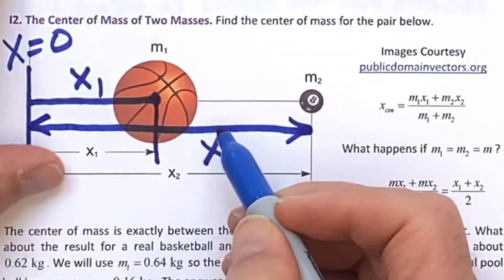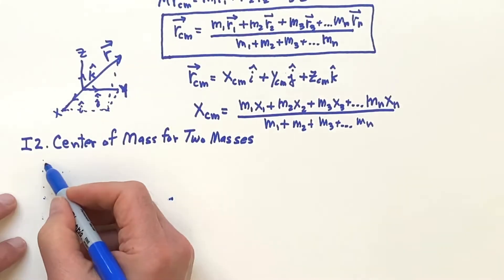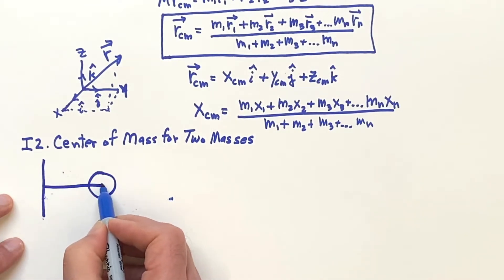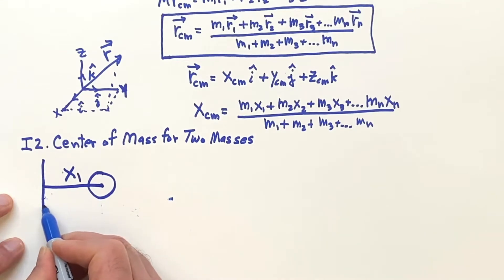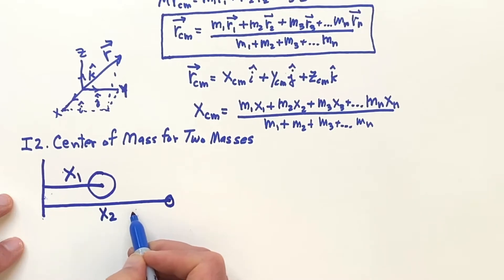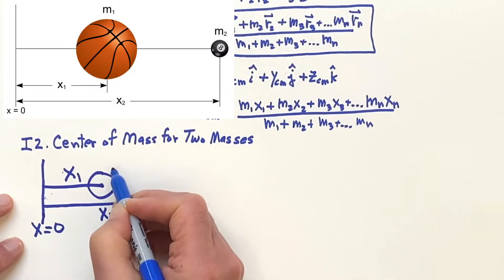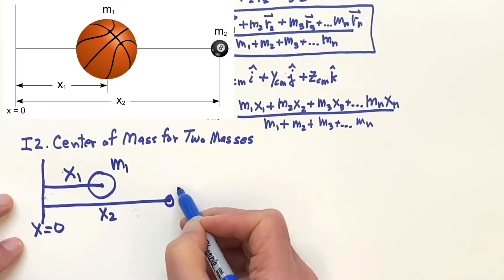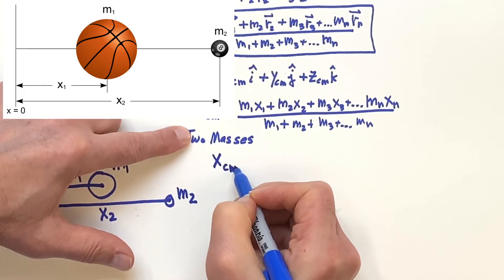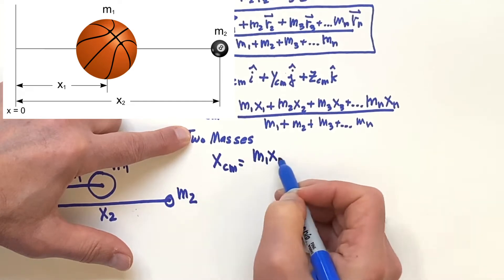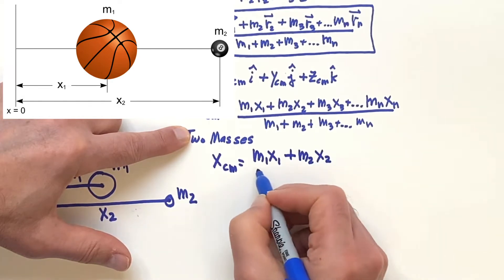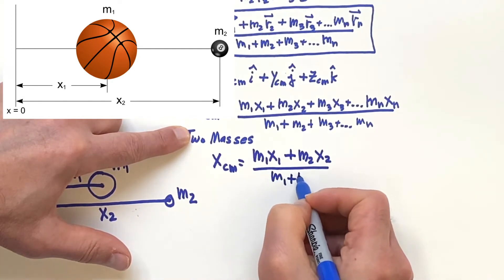We're going to apply the formula. We have x1 here and x2 here, with x equal to zero. This is mass one and this is mass two. The formula says the center of mass is: take the first mass times its distance from the reference, plus the second one, then divide by the sum.